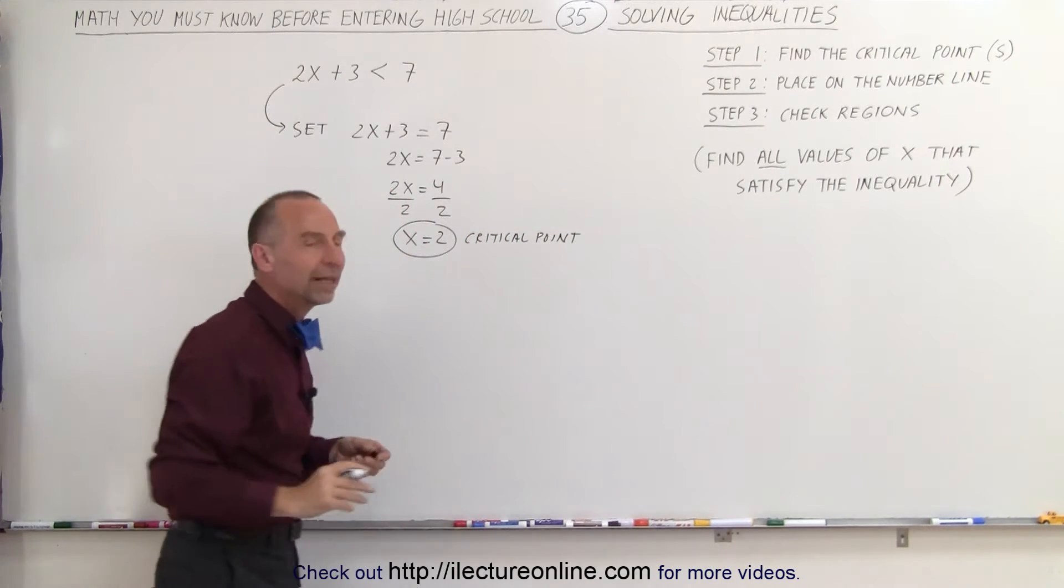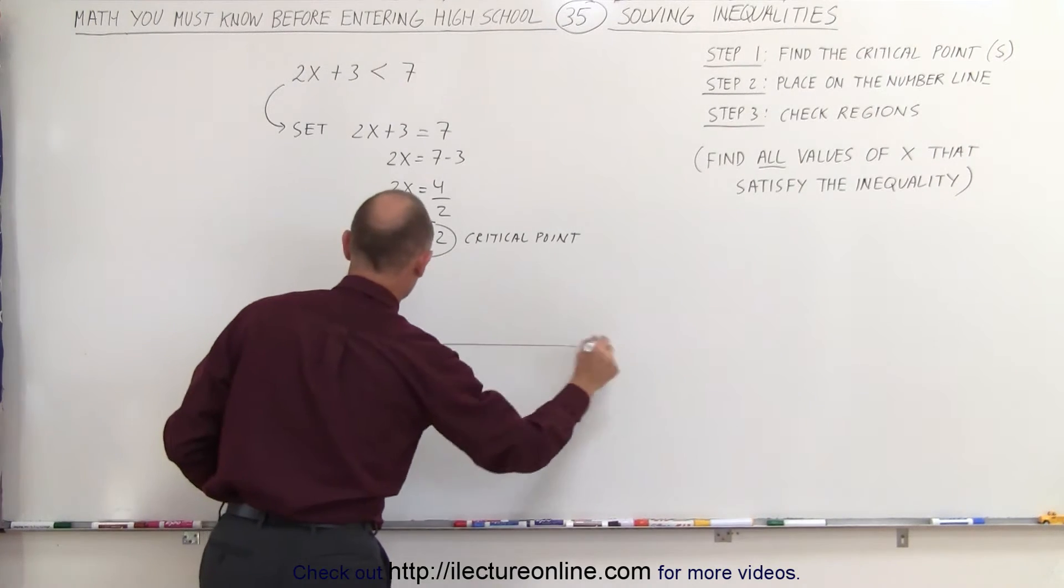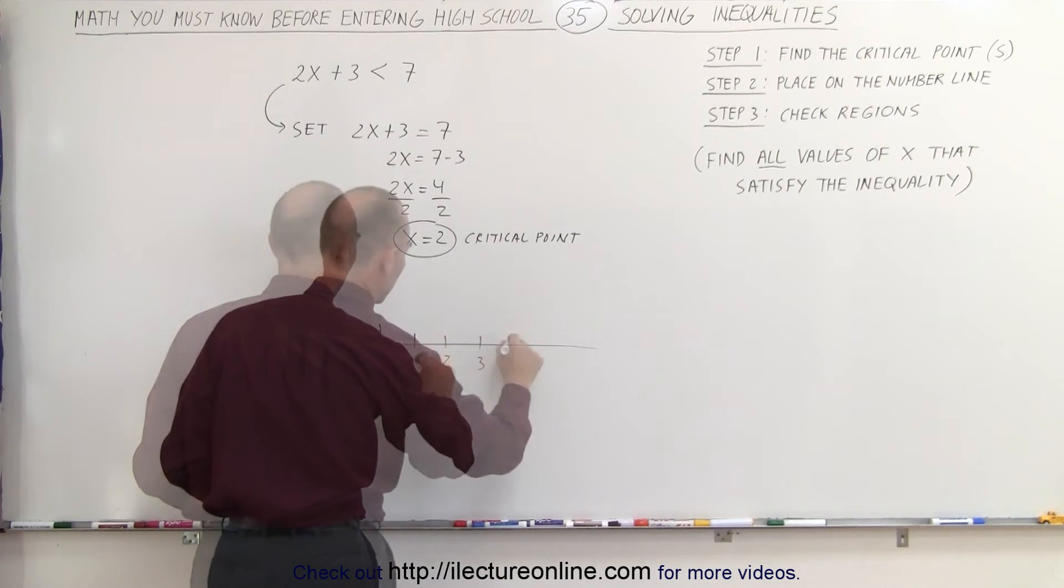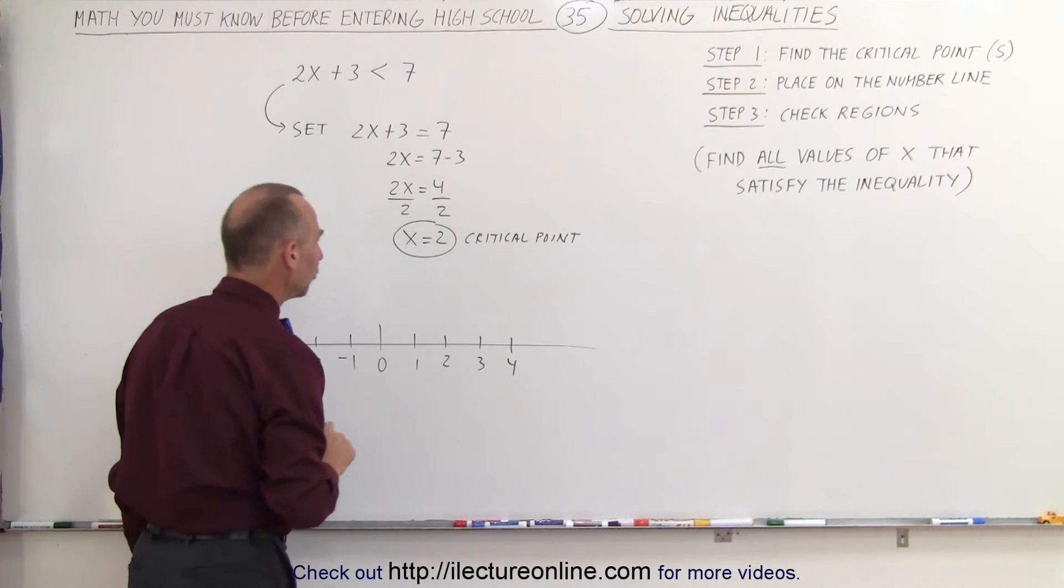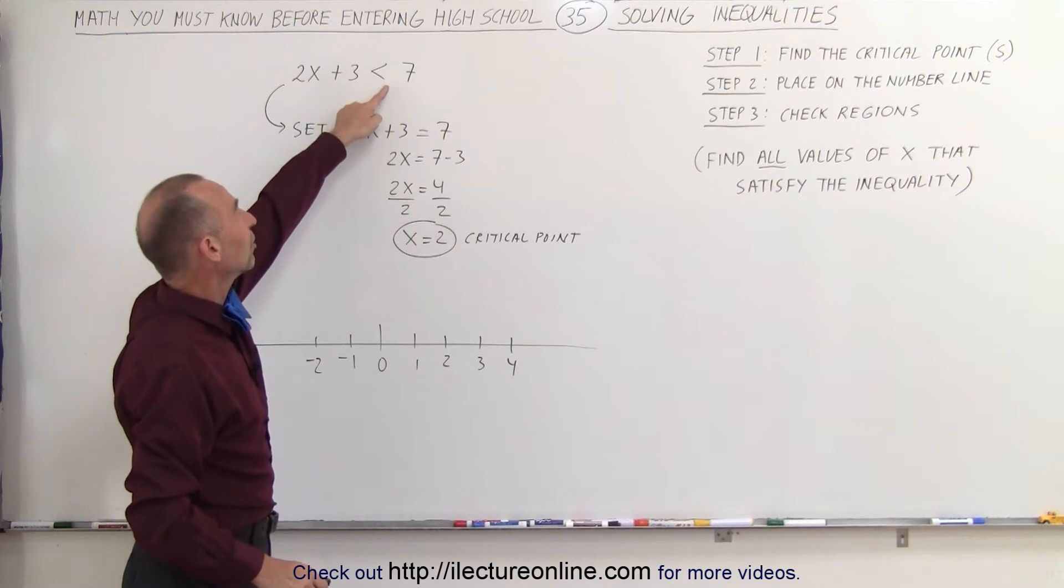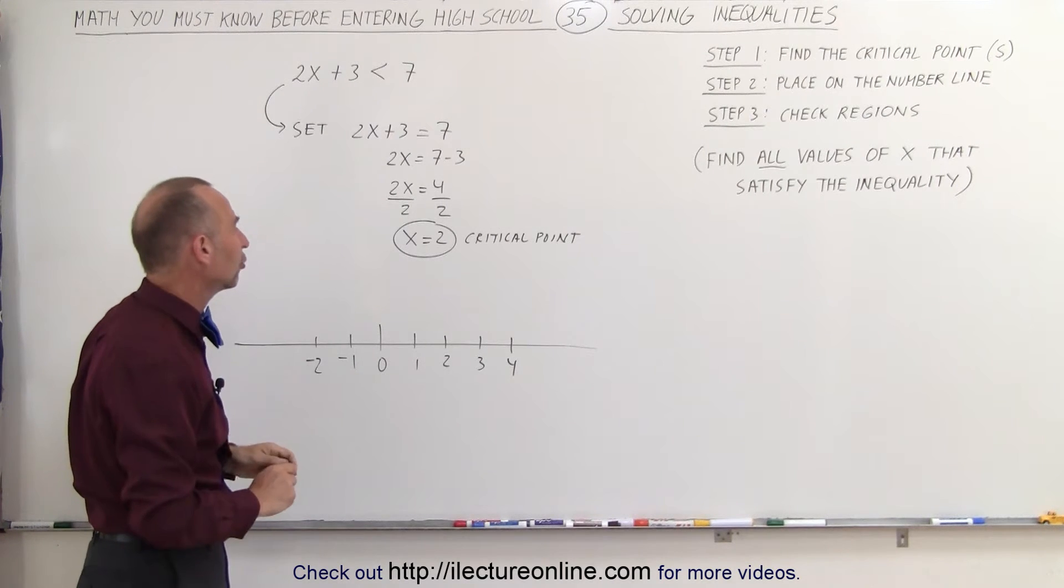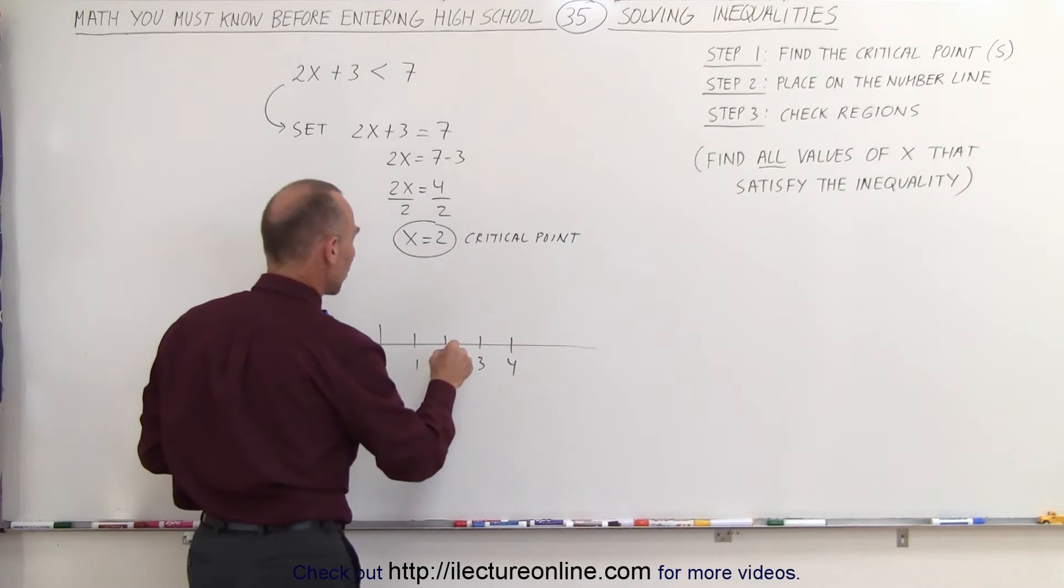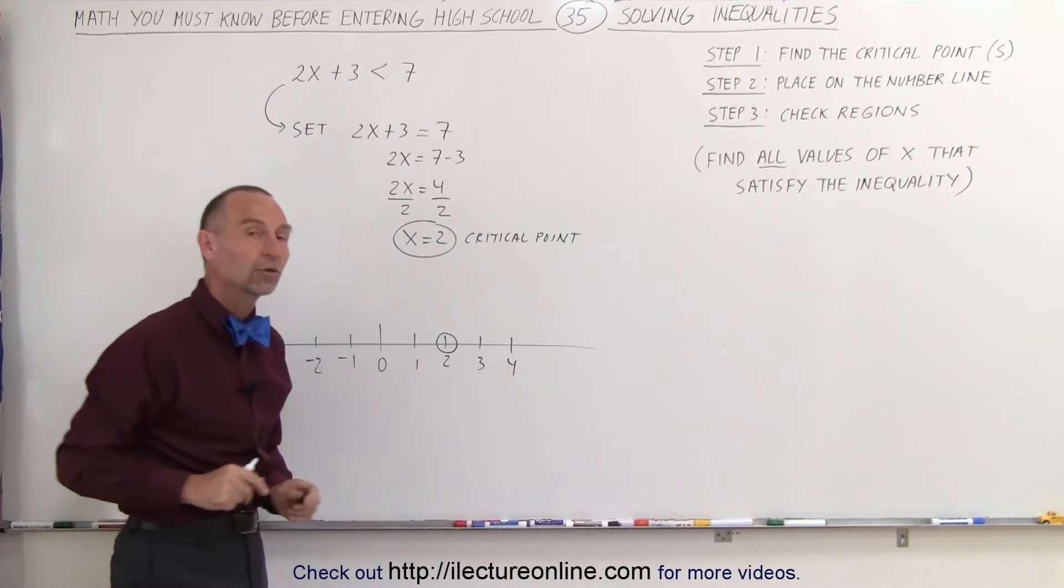Now the next step tells us to place that on the number line. So what we're going to do next is draw a number line. Here's the number 0, 1, 4 and we have negative 1, negative 2 and so forth. So we find the critical point. Now notice, since the inequality sign does not have an equal sign associated with it, the critical point is not part of the solution, which means we're going to draw a circle right there and not fill it in. 2 is not part of the solution.